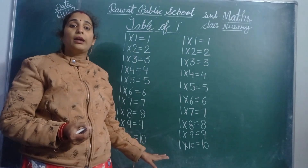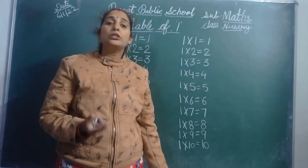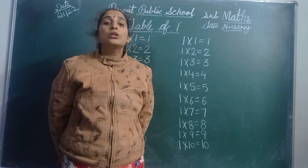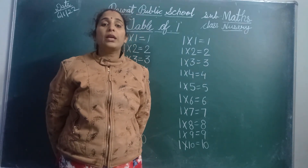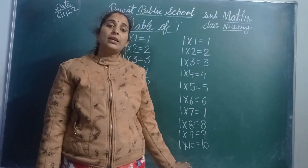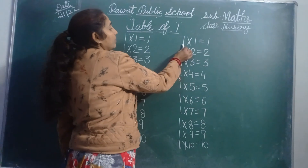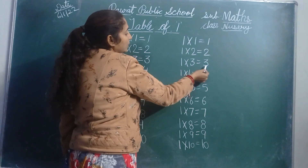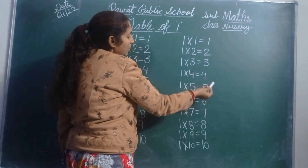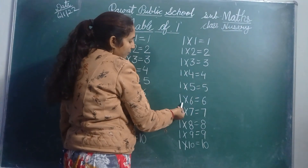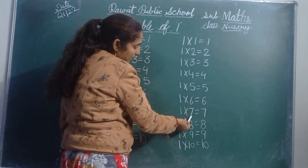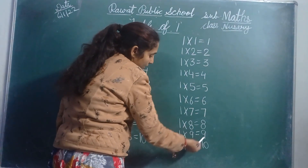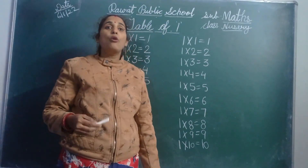Learn it and write it down. Learn counting 1 to 100, learn table of 0, and do your copy of table of 1. Both learn it and write it down, 2 pages. On Saturday check your notebook. Take table of 1 to revise — speak! 1 one is 1, 1 twos are 2, 1 threes are 3, 1 fours are 4, 1 fives are 5, 1 sixes are 6, 1 sevens are 7, 1 eights are 8, 1 nines are 9, 1 tens are 10.